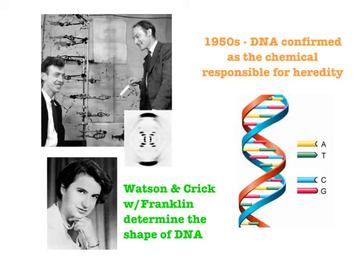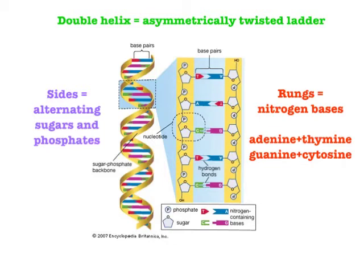Looking more specifically at the double helix: it's an asymmetrically twisted ladder with wide spots and narrow spots. The sides — shown here in orangish and blue — are the backbone, made up of alternating sugar and phosphate molecules. If you look at the drawing, you can see phosphate, sugar, phosphate, sugar, phosphate, sugar repeating down each side. These vertical parts of the ladder, made of sugars and phosphates, are called the backbone.